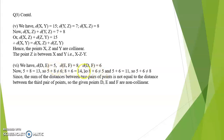Also 5 plus 6 is equal to 11, which is not equal to the third side, that is 8. Since the sum of distances between two pairs of points is not equal to the distance between the third pair of points, the given points D, E and F are non-collinear.